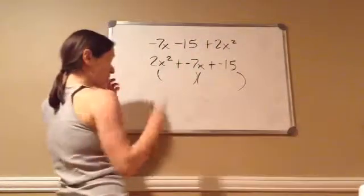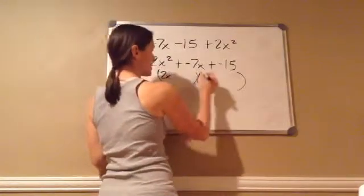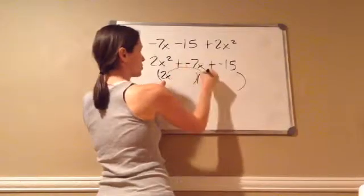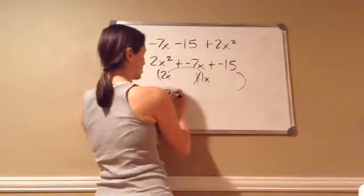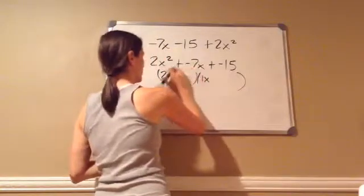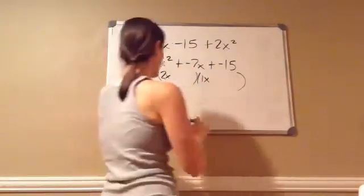So, what you're going to do is you're going to say 2x times 1x, because 2x multiplied times 1x gives me 2x squared. So, just showing you real quick.